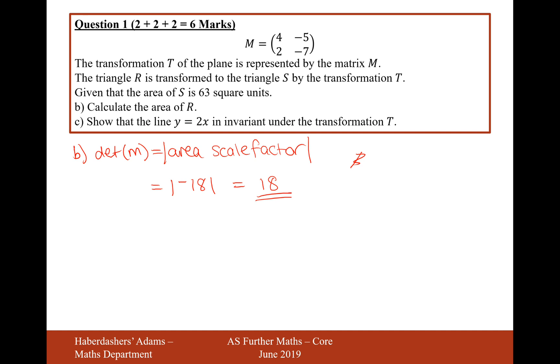So therefore, we're now going to do for area R, it's going to be 63 divided by 18, which is 63 divided by 18 is 3.5. So the area of triangle R is 3.5 units squared.